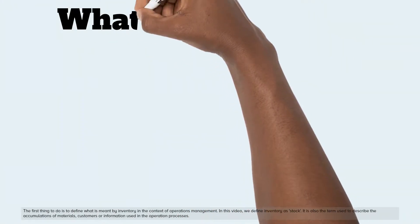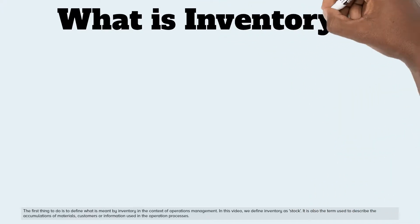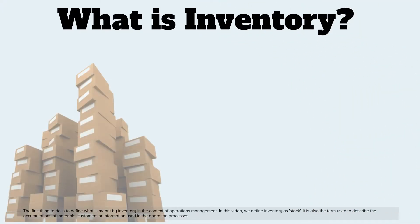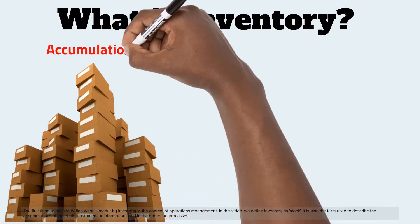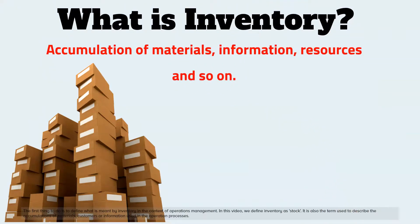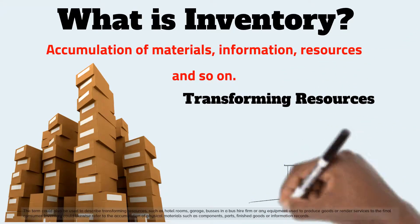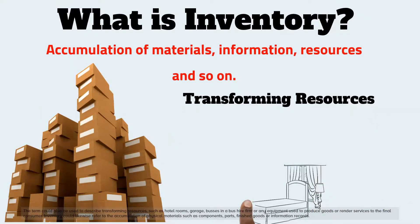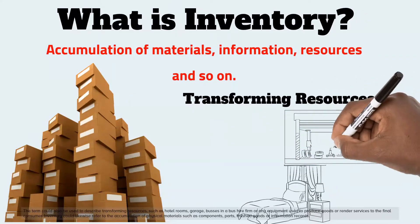The first thing to do is to define what is meant by inventory in the context of operations management. We define inventory as stock. It is also the term used to describe the accumulations of materials, customers, or information used in the operation processes. The term could also be used to describe transforming resources, such as hotel rooms, garage, buses in a bus hire firm, or any equipment used to produce goods or render services to the final consumer.